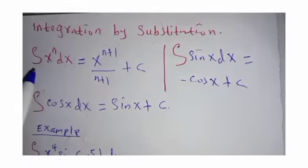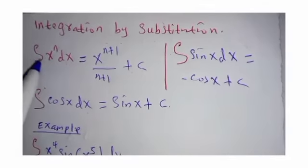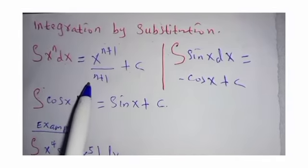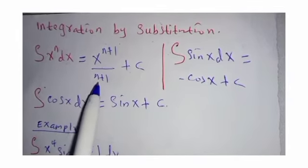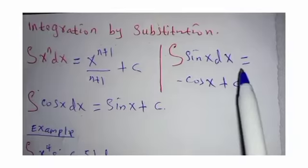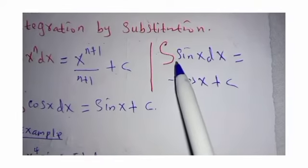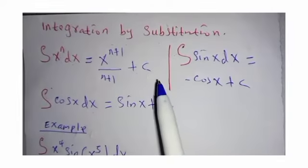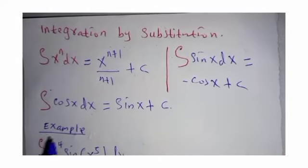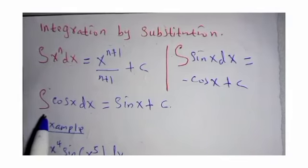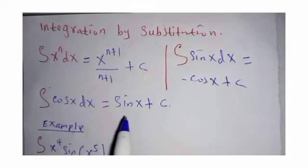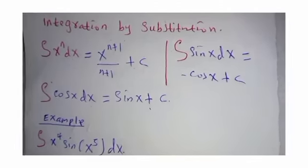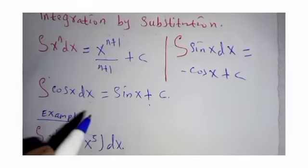We are going to use this fact here that integral of x power n dx when you integrate you are going to get x power n plus one divided by n plus one plus c. When you have integral of sine of x with respect to dx the result is negative cos of x. When you have the integral of cos of x dx the result is sine of x plus c.